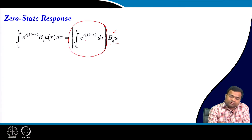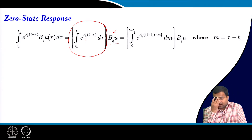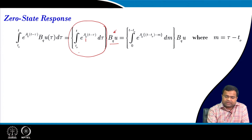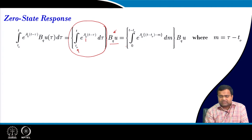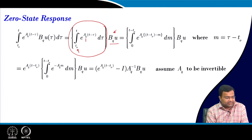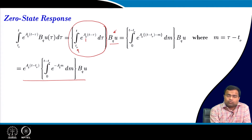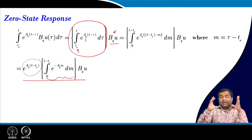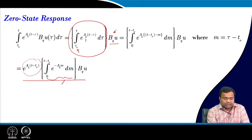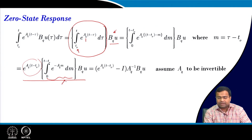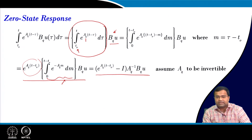This solution also depends on the A_Q matrix. If you change the integral limits — converting from an arbitrary initial time t_0 to t into 0 to (t minus t_0) — the expression comes out to e^{A_Q(t - t_0)} times the integral. If the A_Q matrix is invertible, this solution can be written in analytical closed form.